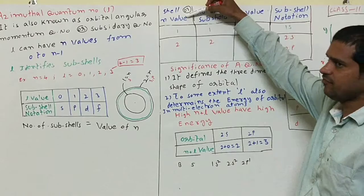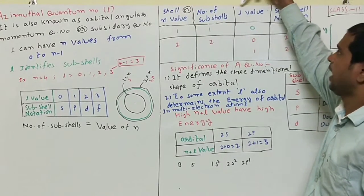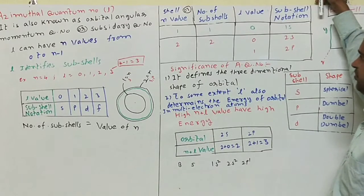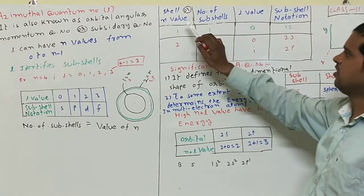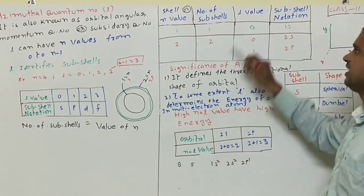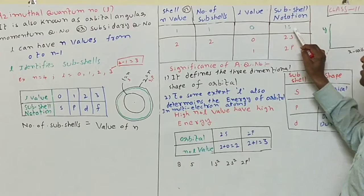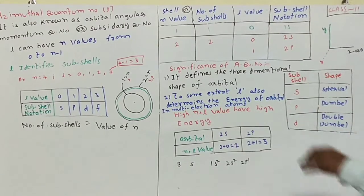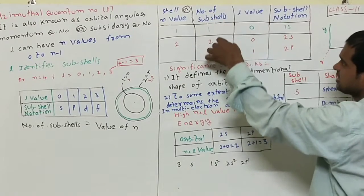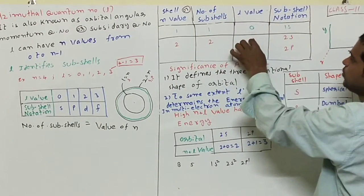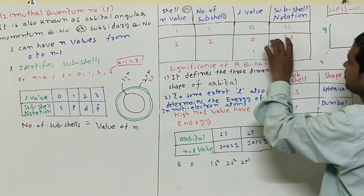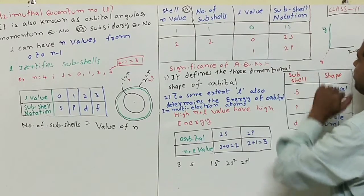See here, shell or n value and number of subshells allowed and L values and subshell notations. In case of first shell or n equals 1, number of subshells are only 1 and the L value is 0, subshell notation is 1S. In case of second shell, number of subshells are 2 and L values are 0 and 1, and subshell notations are: for 0 it is 2S, for 1 it is 2P.